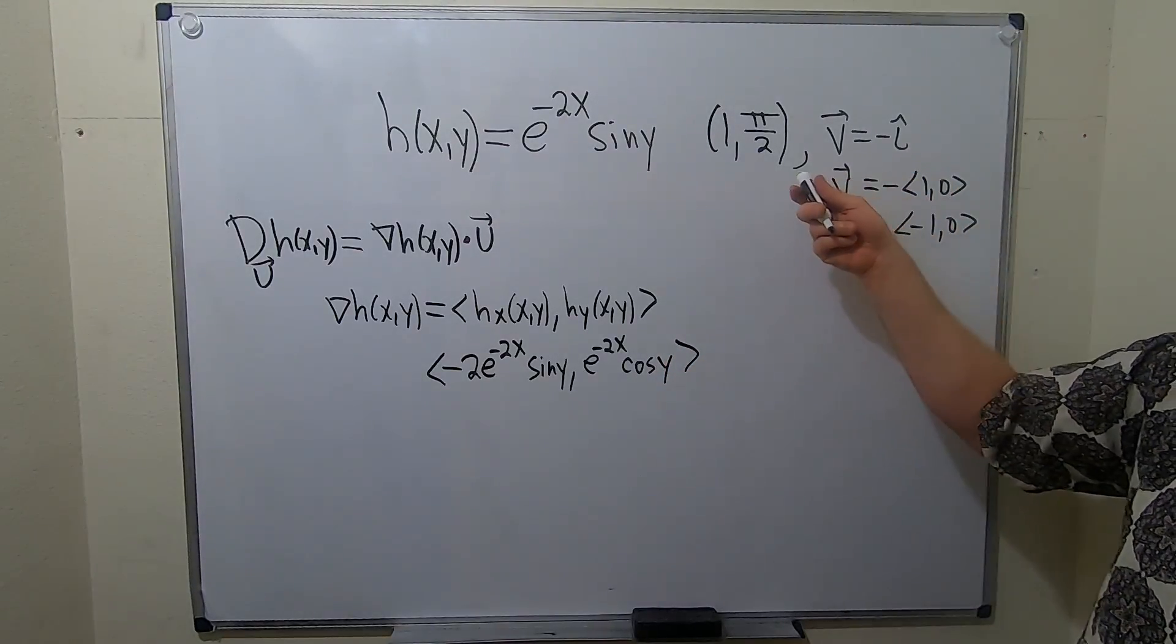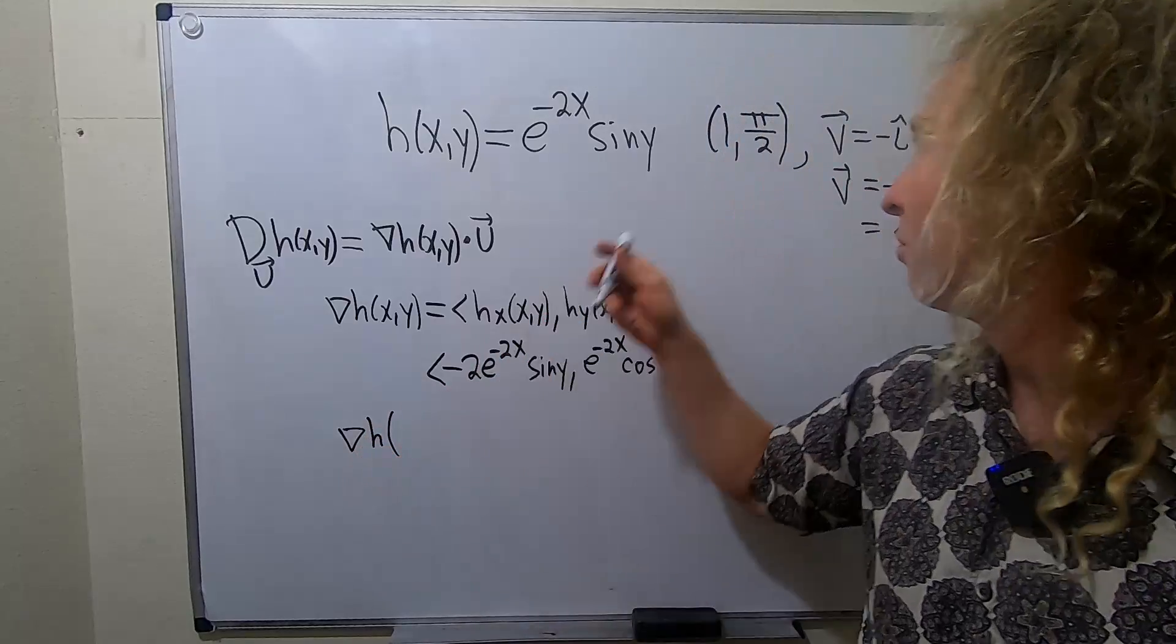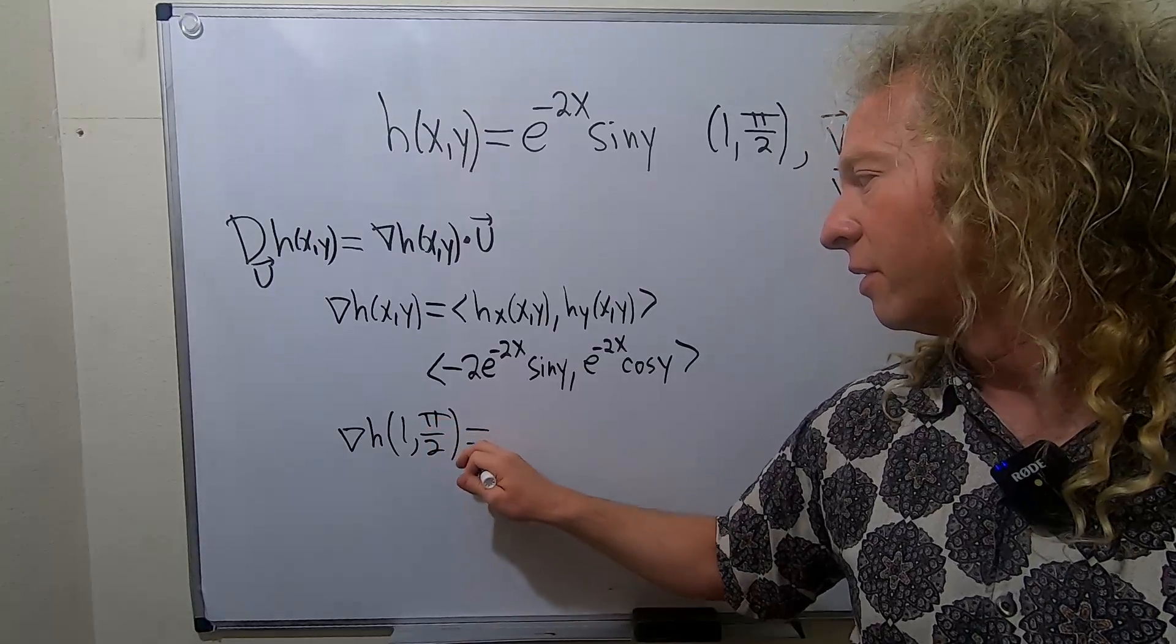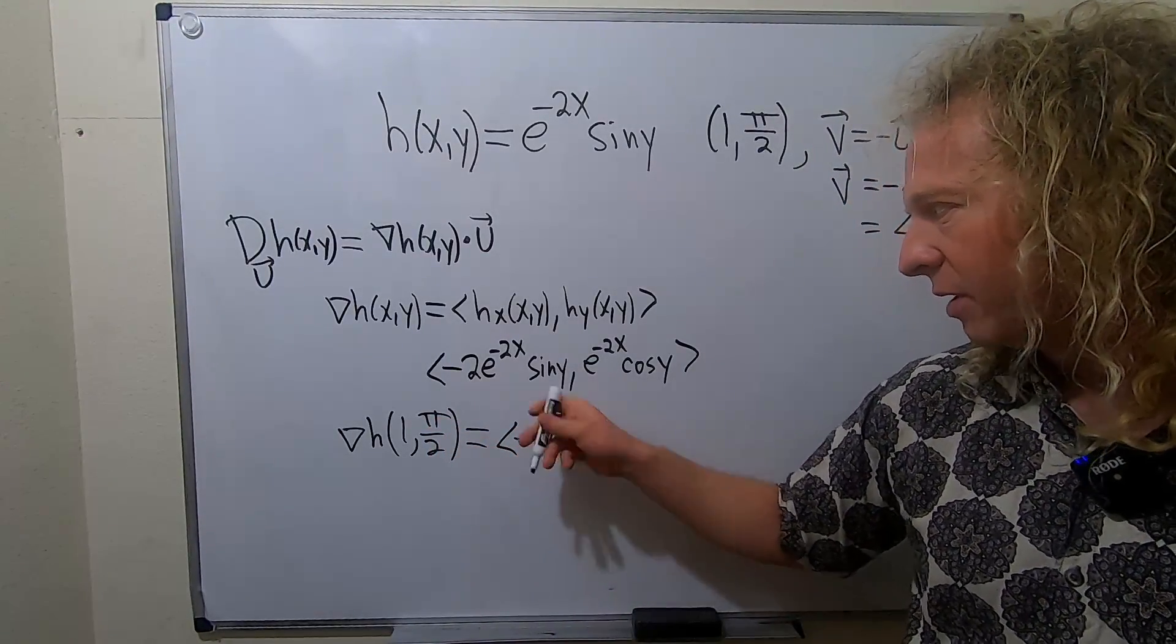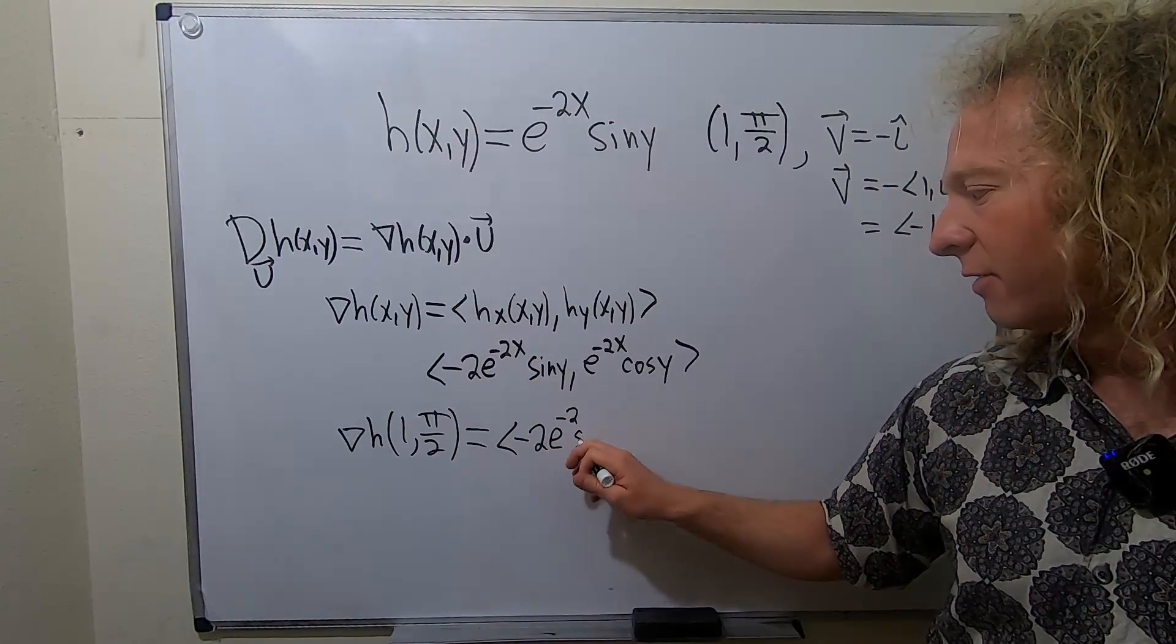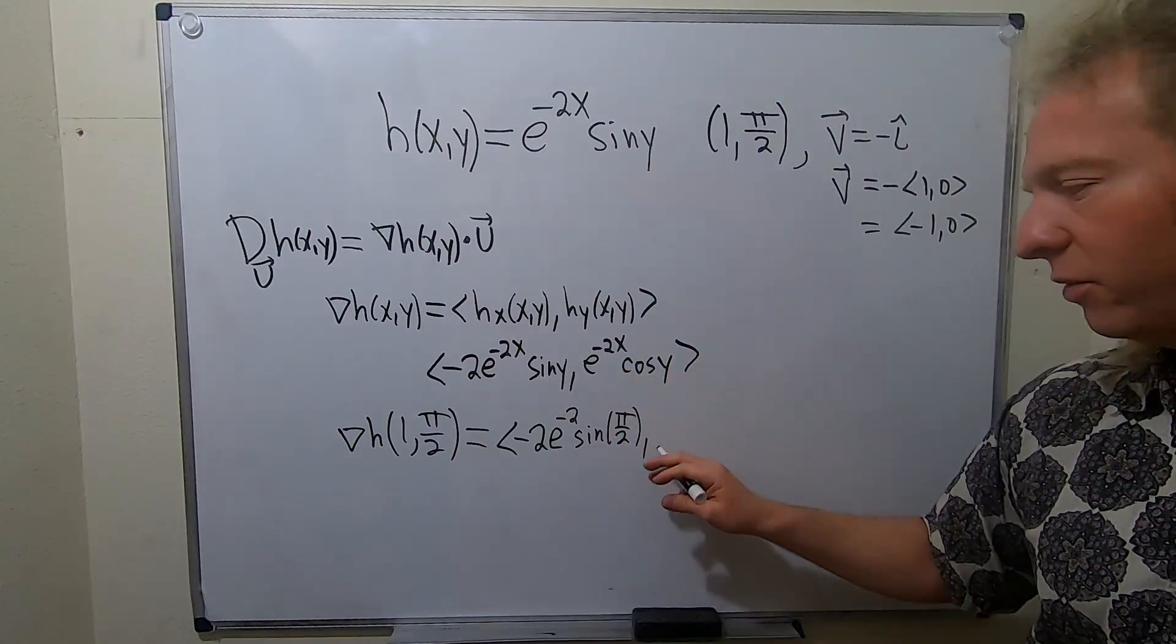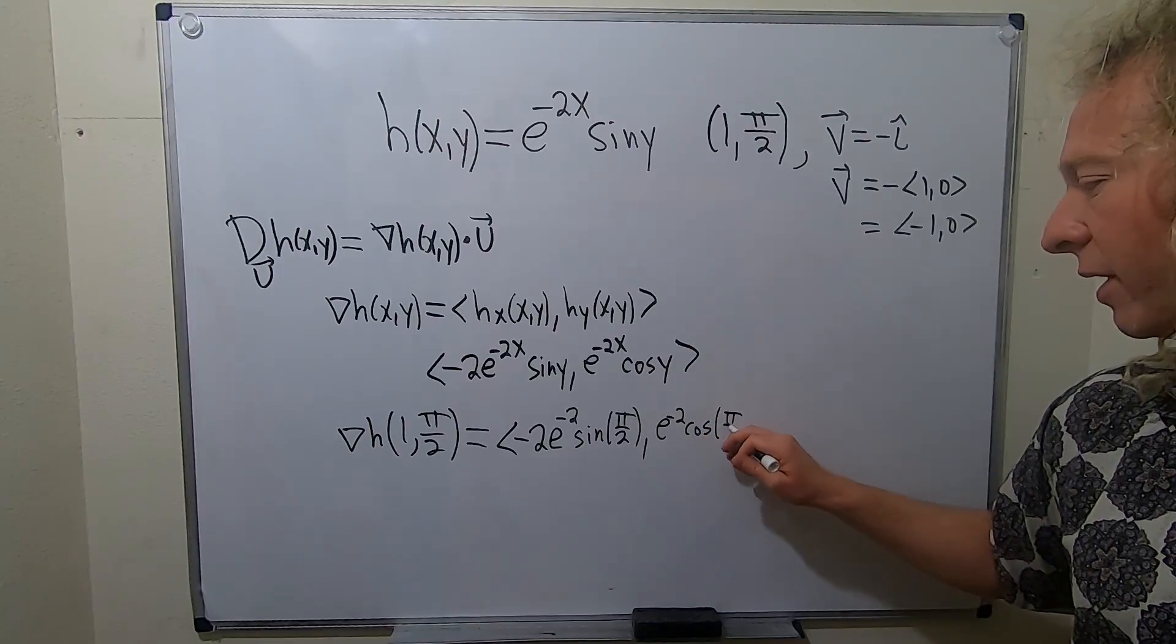All right, now we've got to plug in our number, 1 pi over 2. So let's do that. So the gradient at 1 pi over 2. This is going to be interesting. I have not done this problem. So our x is 1. So it's going to be negative 2e to the negative 2 because x is 1, and then sine of pi over 2. And then here it's going to be e to the negative 2 again, cosine of pi over 2. Going kind of fast.